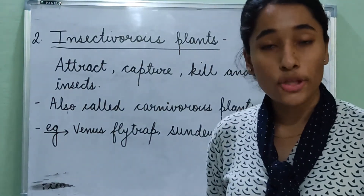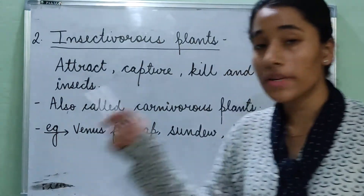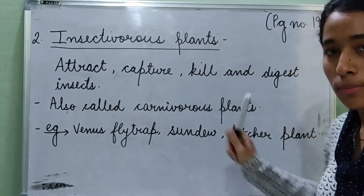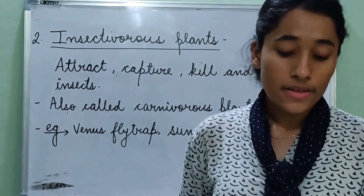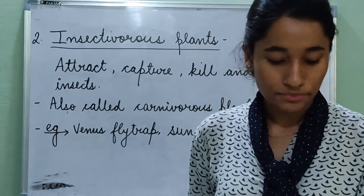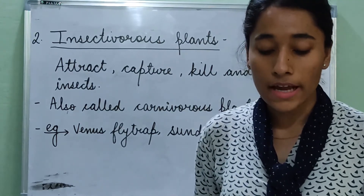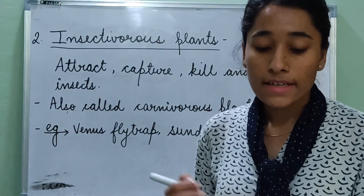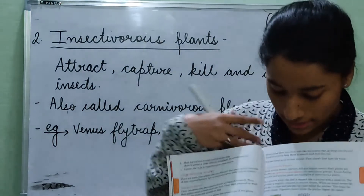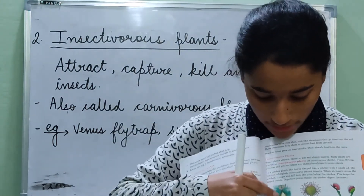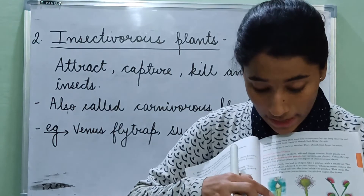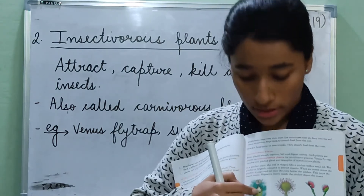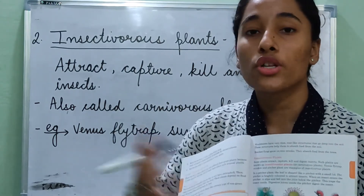Venus flytrap, sundew, and pitcher plant are some examples of insectivorous plants. In a pitcher plant, the leaf is shaped like a pitcher with a small lid. The pitcher is brightly colored — with red and bright green colors — to attract insects.